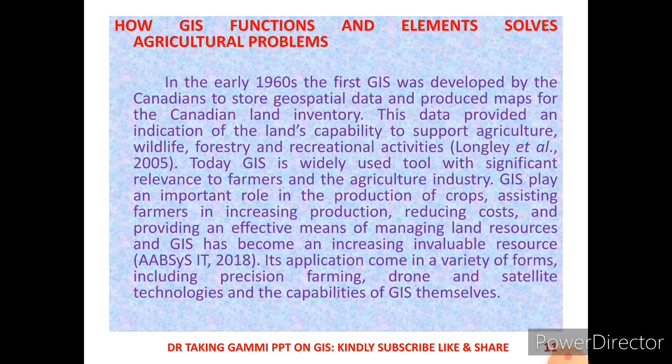In the early 1960s, GIS was developed by Canadians to solve geospatial data and produce maps for the Canadian Land Inventory. This data provided an indication of the land's capability to support agricultural, wildlife, forestry, and recreational activities. Today it is a widely used tool with significant relevance to farmers and the agricultural industry, playing an important role in crop production, helping farmers increase production, reduce costs, and effectively manage land resources.